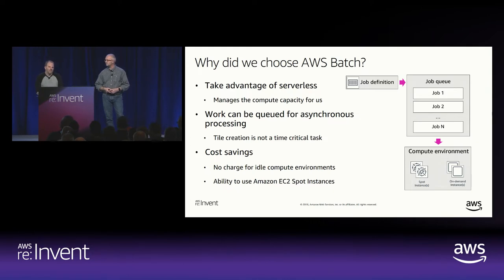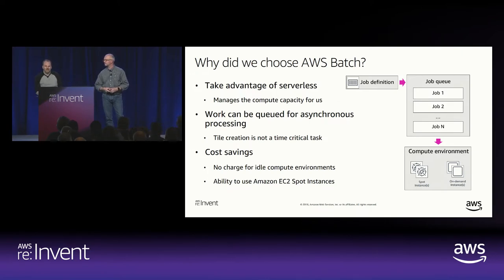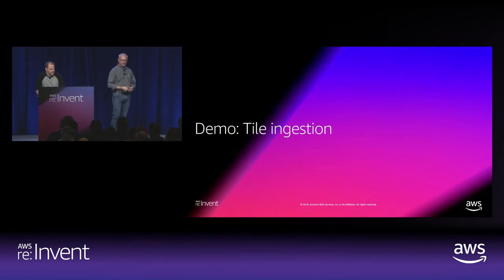Batch also gave us a lot of knobs for cost saving. Like Lambda, when there's no charge when there are no functions running — in Batch we can set the minimum compute power for our compute environment to zero. So if there are no jobs running, we're not paying for Batch. We can also save costs by using EC2 Spot Instances and running jobs late at night when spot prices go down. But we're not going to manage those spot instances — we just tell Batch to use them for compute power.